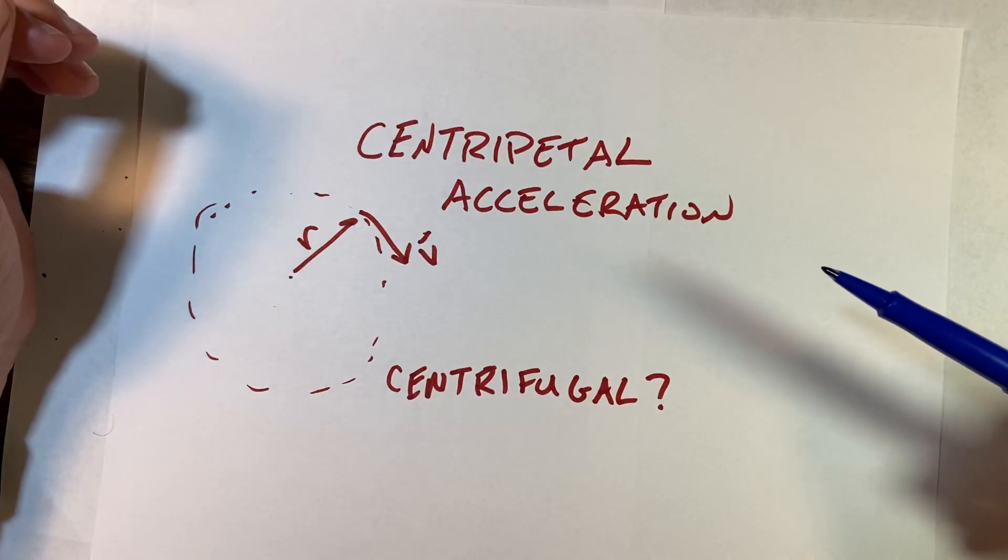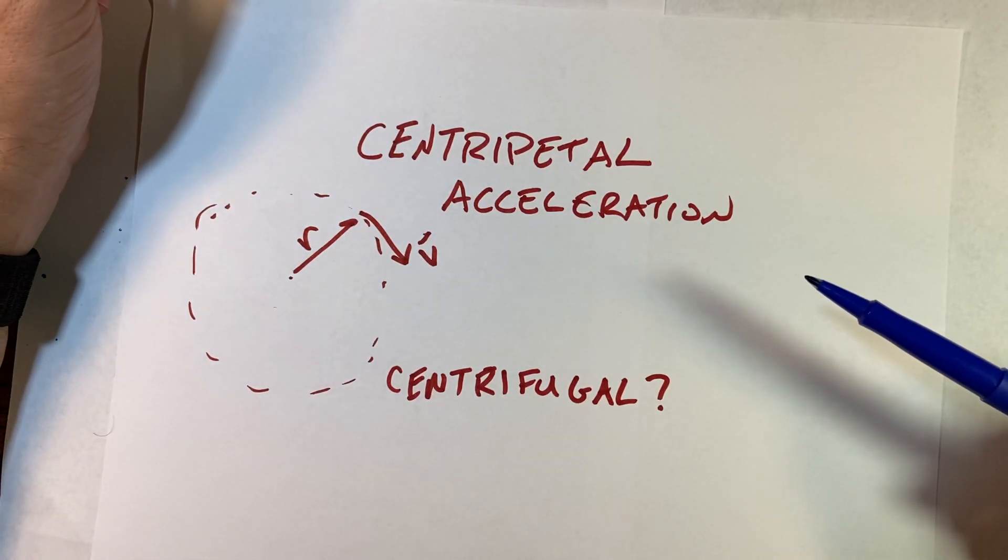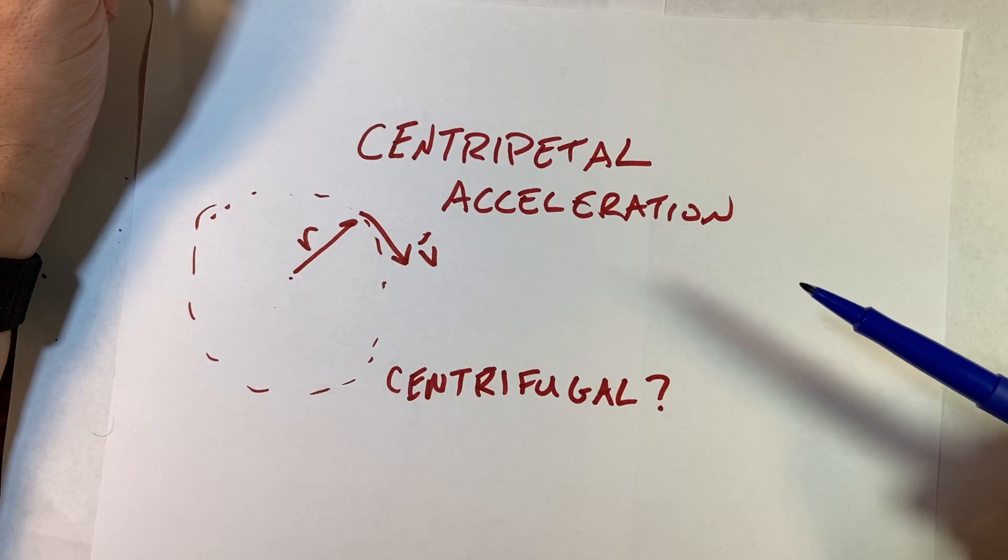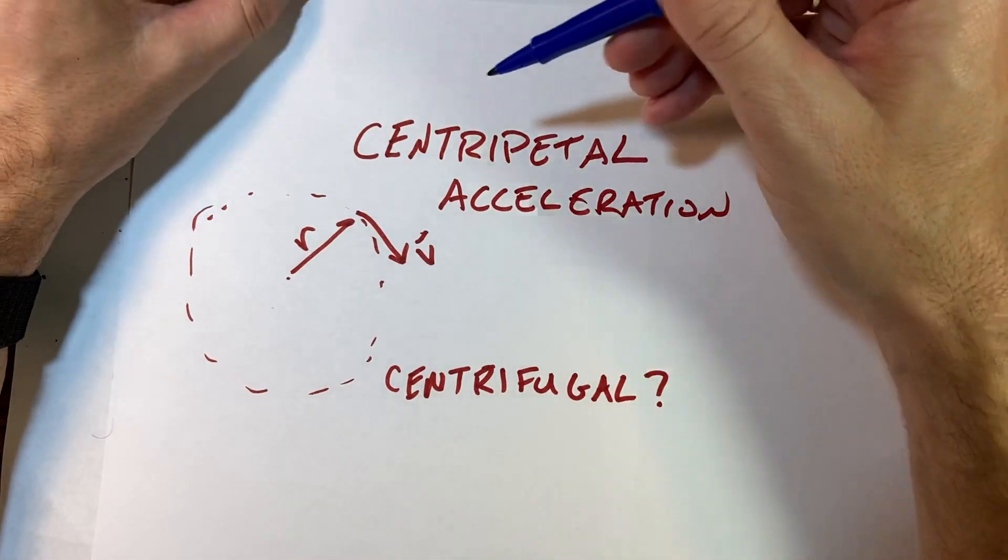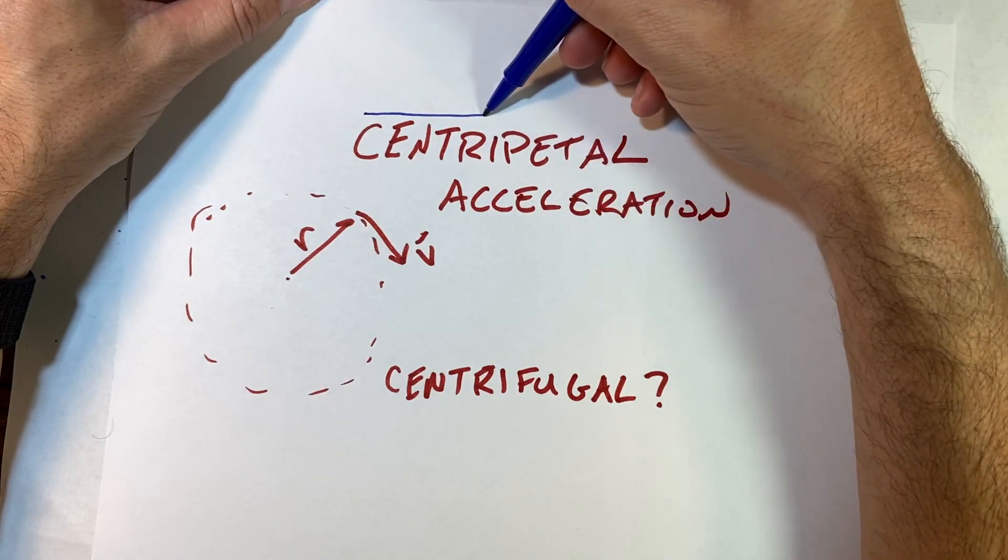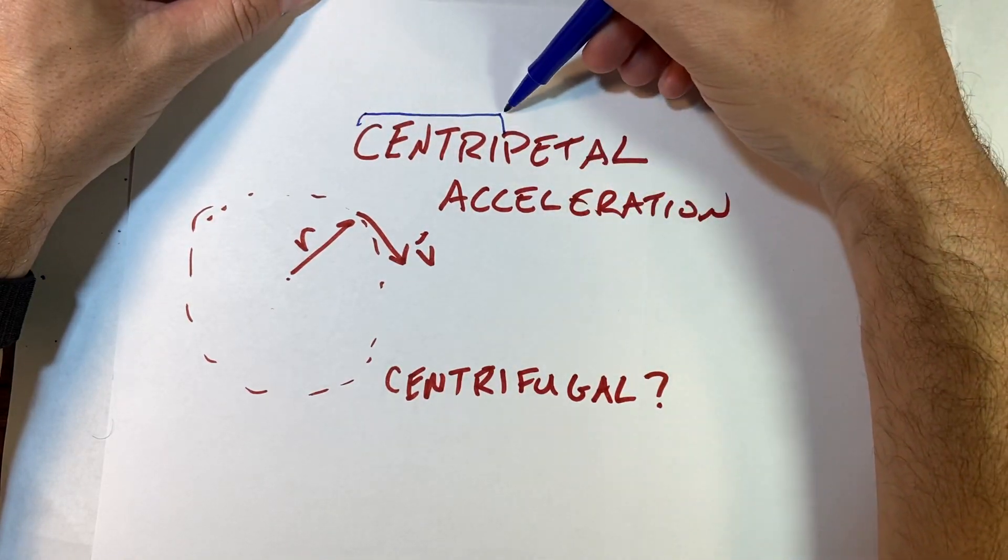This is how do you find the acceleration of an object moving in a circle, and I'm going to derive the formula for you. Now let me point out something: this is centripetal acceleration. Let's break that into two words because it's important.